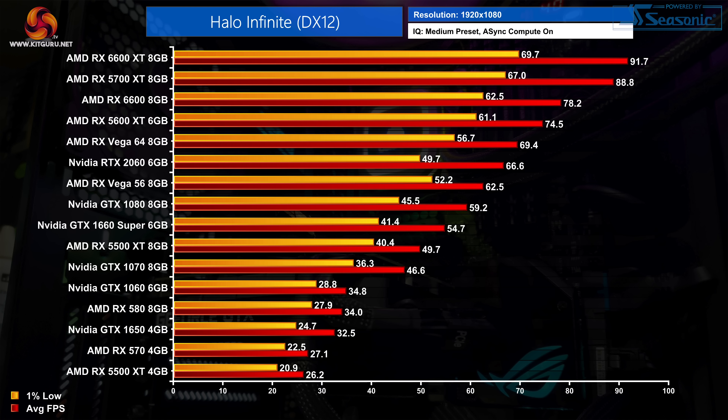As for the medium preset, performance is much more consistent here, though it is still very tough on cards with just 4GB of VRAM. That said, we can once again see Pascal GPUs really struggling in Halo Infinite. The GTX 1060 can't even maintain a solid 30 FPS at 1080p medium settings while the 1070 isn't even able to keep the 1% lows above 40 FPS. Contrast that against Vega — even Vega 56 is faster than the GTX 1080. Even the RX 6600 XT isn't able to average over 92 FPS at 1080p medium settings, which for me is a bit worrying.